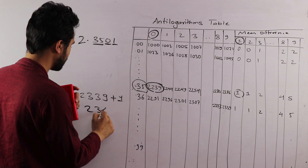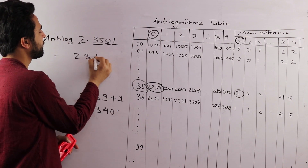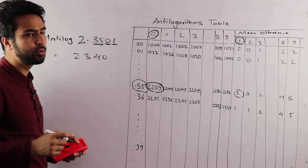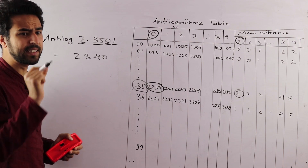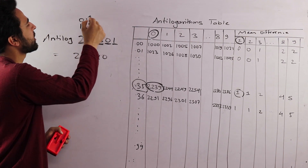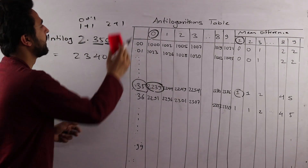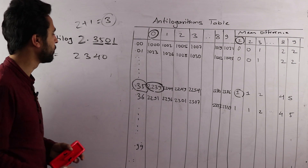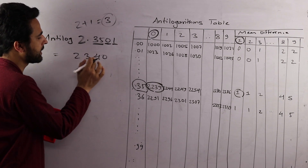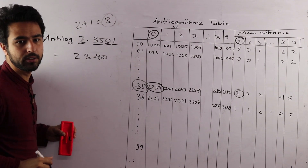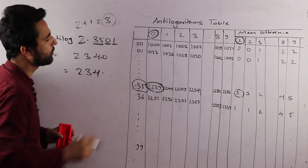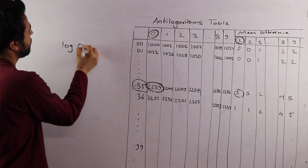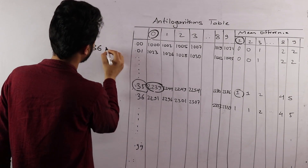You got two three four zero. The answer is two three four zero. Two plus one gives one, adding one more gives two three one two. So the antilog of 2.3501 is 0.3639.